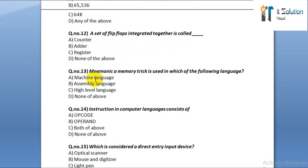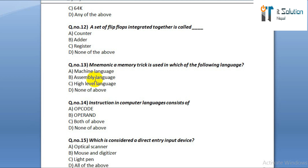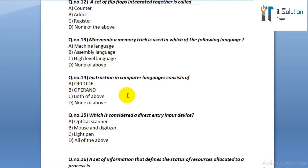Question number thirteen: mnemonic or memory trick is used in which of the following language? Option A: machine language. Option B: assembly language. Option C: high level language. Option D: none of the above. Question number fourteen: instructions in computer language consist of option A: op code. Option B: operand. Option C: both of above. Option D: none of above.